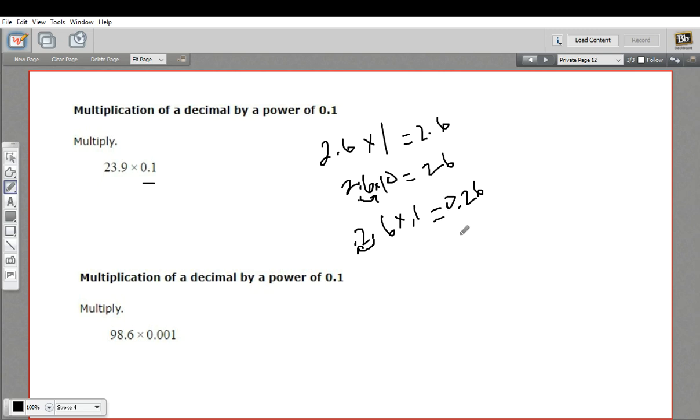And if you multiply by 0.001 or 0.01, you've got two places behind the decimal point. So you move the decimal point two places. And then if there's an extra place, you fill it in with a 0. So 2.6 times 0.01 would be 0.026.